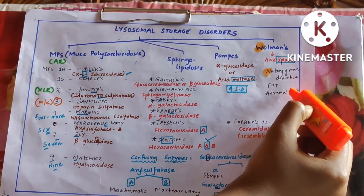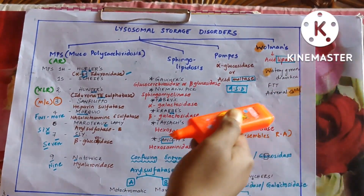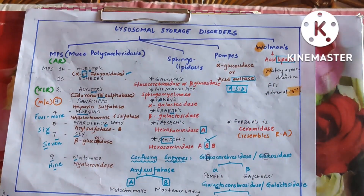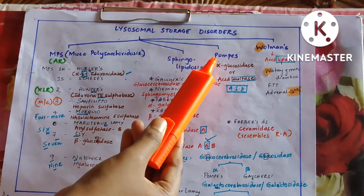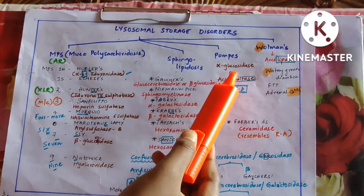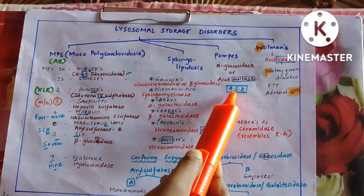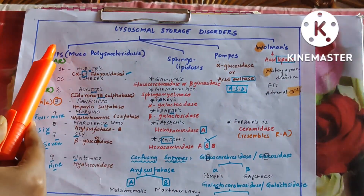Coming to Wolman's disease: W for watery diarrhea, so Wolman's disease presents with watery diarrhea and failure to thrive (FTT means failure to thrive). Adrenal calcification is an important feature in Wolman's disease. Wolman's disease is due to acid lipase deficiency, whereas Pompe's is due to acid maltase deficiency or alpha-glucosidase deficiency.